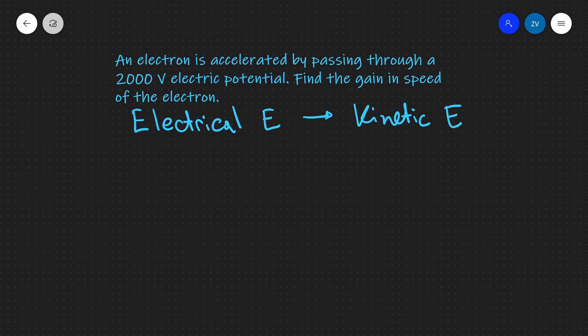Our electrical energy is given by charge times potential difference. Our charge in this case is e, our potential difference is V, and that gets fully converted to kinetic energy which is equal to one-half m v squared.